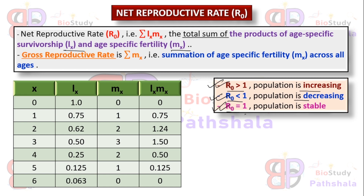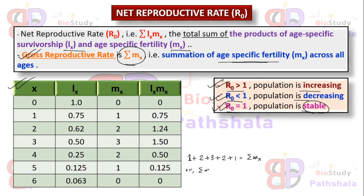The gross reproductive rate is the summation of mx — the total sum of age-specific fertility across all ages for a population. From the given data, if we calculate the gross reproductive rate: 1 + 2 + 3 + 2 + 1 = 9. So the gross reproductive rate is nine.